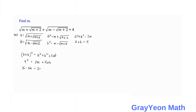If we simplify further, we divide both sides by 2. The 2 cancels out. We factor to get 8 minus m, so ab is equal to 8 minus m.